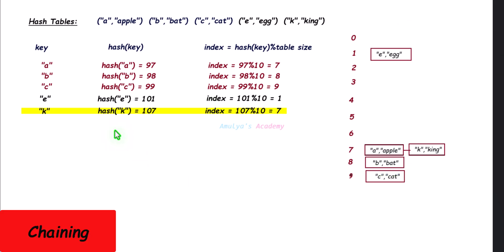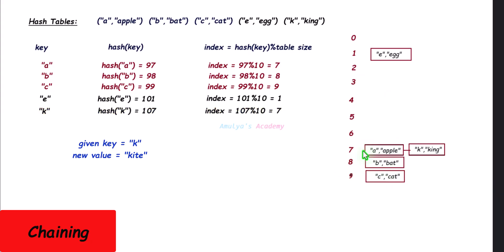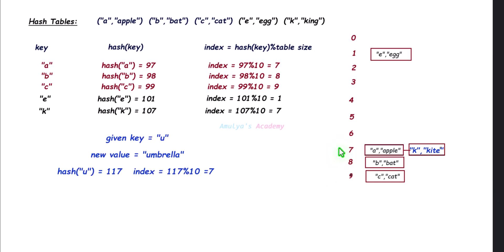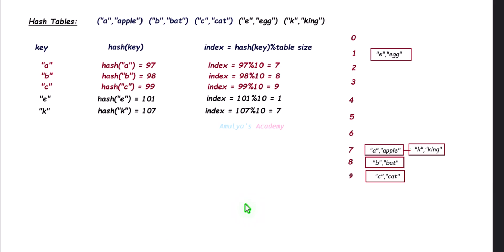Now, I want to update this key-value pair: for key 'k', I want to update the value to 'kite'. First, the given key is 'k'; find its index — 7 — go to that index. Here, collision is handled using the chaining method, so search through the linked list for key 'k'. Found it — then update its value to 'kite'. If the key is not found, we search through the linked list but don't find it, so return the message 'key is not found'.